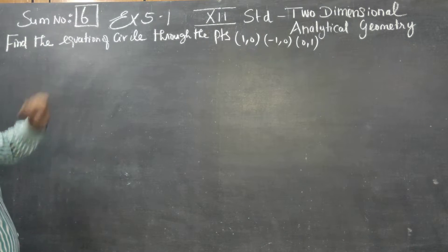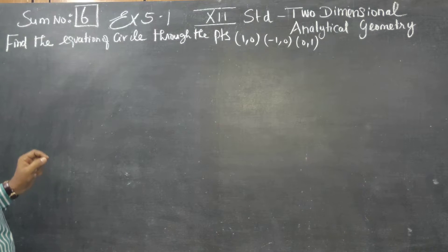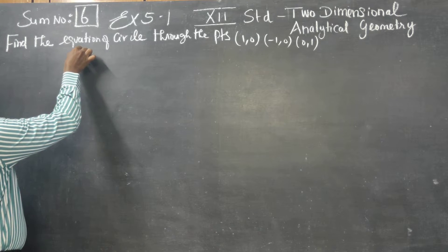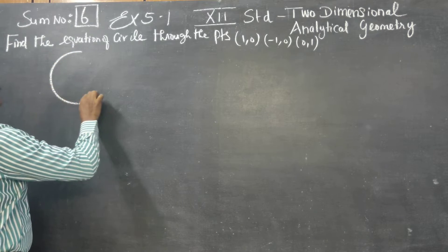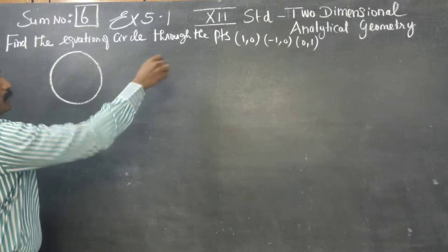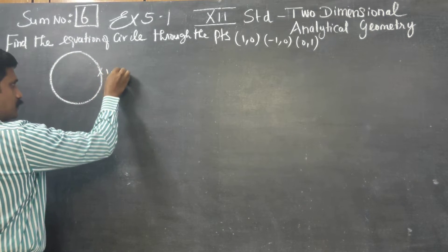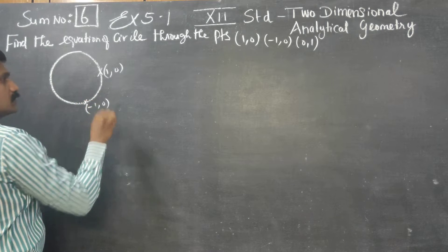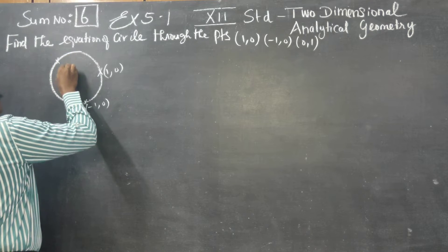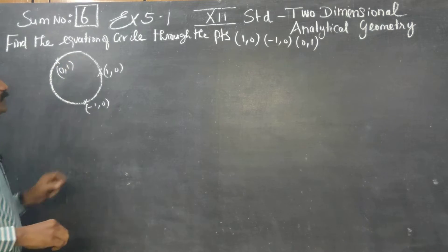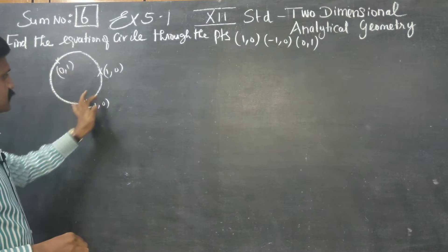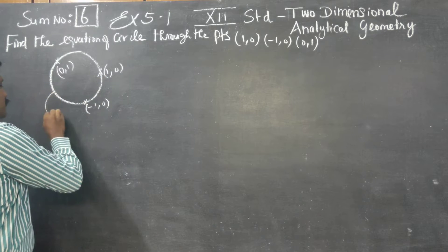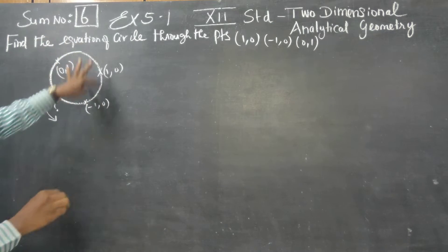Problem number 6. A circle passes through the points (1,0), (-1,0), and (0,1). A circle passes through three points, and I want the equation of this circle.